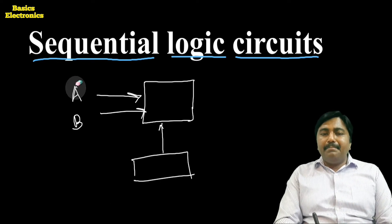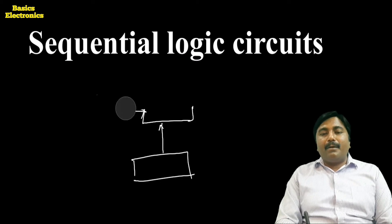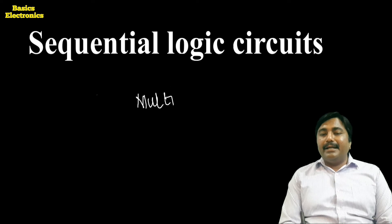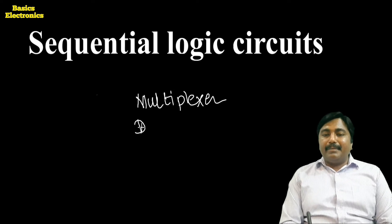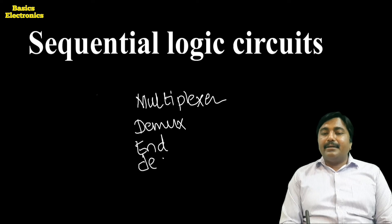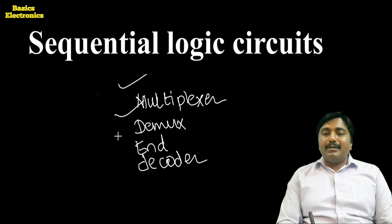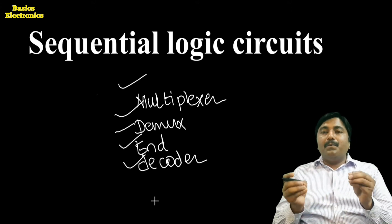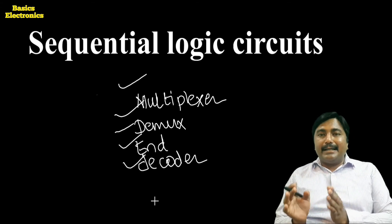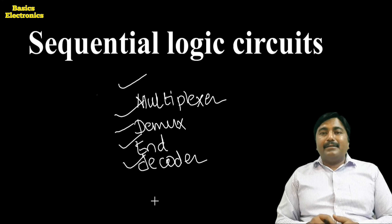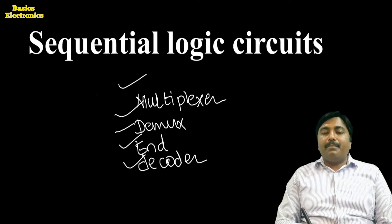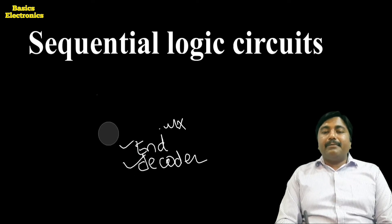This is the main difference between sequential and combinational logic circuits. Examples of combinational logic circuits are the multiplexer, demultiplexer, encoder, and decoder. We had seen these before. If you haven't seen those video lectures, I will provide the link in the playlist.